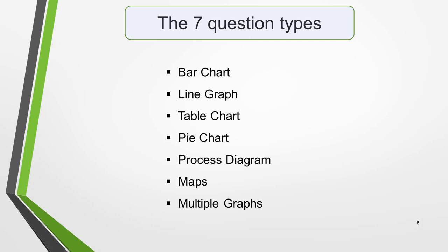I'm now going to give you some checklists to help you identify the main features of the different types of Task 1 questions. I go into detail on how to pick out the main features in specific questions in the lessons on individual question types — you'll find all these lessons on the website via the link in the notes below this video. First, here are the seven types of questions you could get: a bar chart, a line graph, a table chart, a pie chart, a process diagram, maps, or multiple graphs.